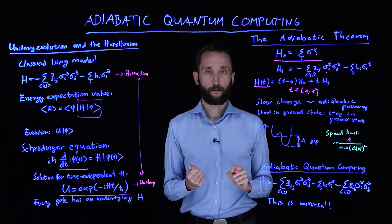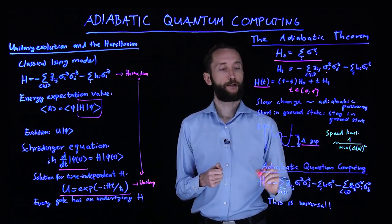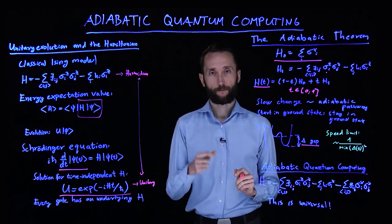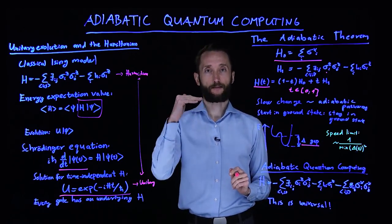The caveat here is that there is a speed limit. A gap of a Hamiltonian means the difference between the ground state, the lowest energy state, and the first excited state.